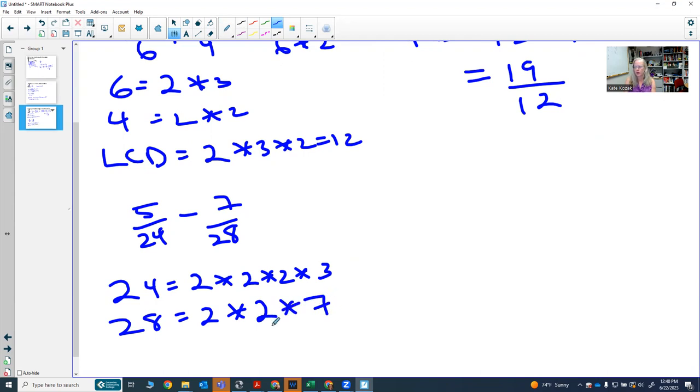So the lowest common denominator has to have 2 times 2 times 2 times 3 to get the 24 in there. It already has a 2 times 2, so we don't need another 2 times 2, but we do need another 7. So the lowest common denominator in this case is 168.